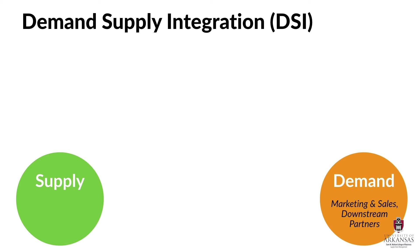In contrast, the supply side consists of the core supply chain functions like sourcing, operations, and logistics. Those are the folks that plan, source, make, move, and help sell products. Upstream suppliers are also part of the supply side of the business.